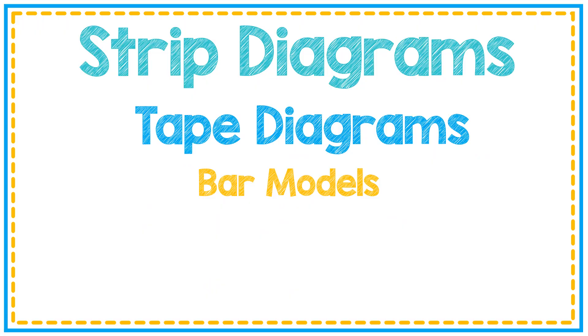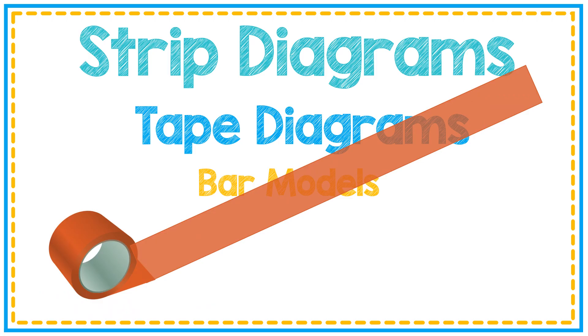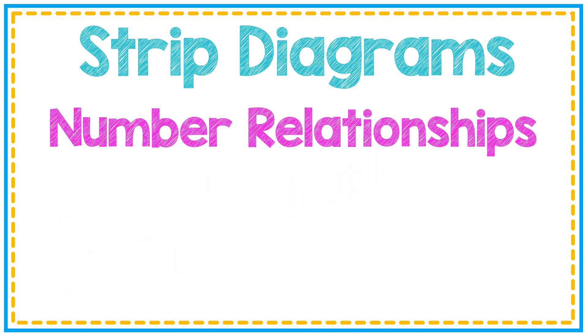Strip diagrams look like this, a strip of tape. That's why they're called strip diagrams or tape diagrams. Strip diagrams represent number relationships. They represent story problems and numbers that can be added. You can subtract, multiply, and divide using strip diagrams. We're going to talk about all four of these types in this tutorial.